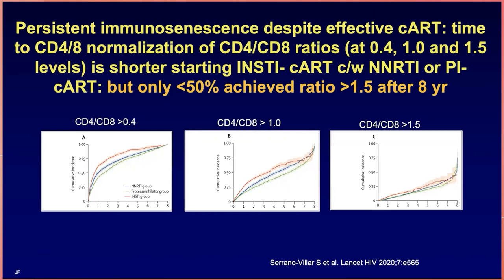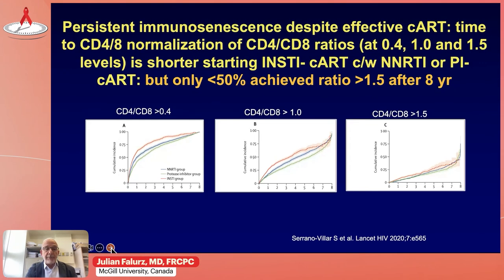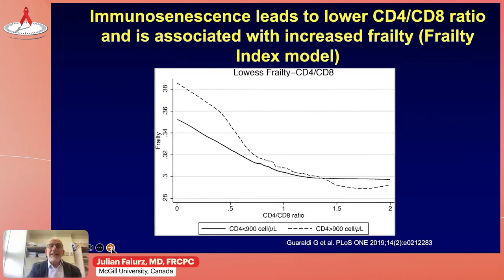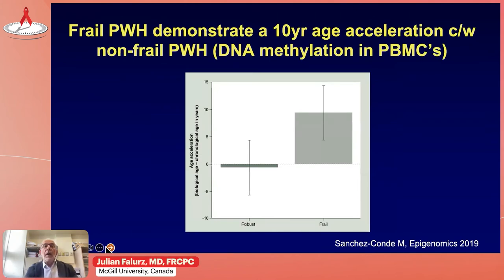Integrase inhibitor-based cART is associated with a more rapid return towards near-normal CD4 to CD8 ratio. However, even in persons on integrase inhibitors, more than 50% still have a low ratio after several years of therapy. Immunosenescence, as demonstrated by a lower CD4 to CD8 ratio, is associated with increased prevalence of frailty as determined in a study by Giovanni Guaraldi using the frailty index model. Additionally, older patients with HIV demonstrate age acceleration of approximately 10 years compared to non-frail individuals, as assessed using DNA methylation.